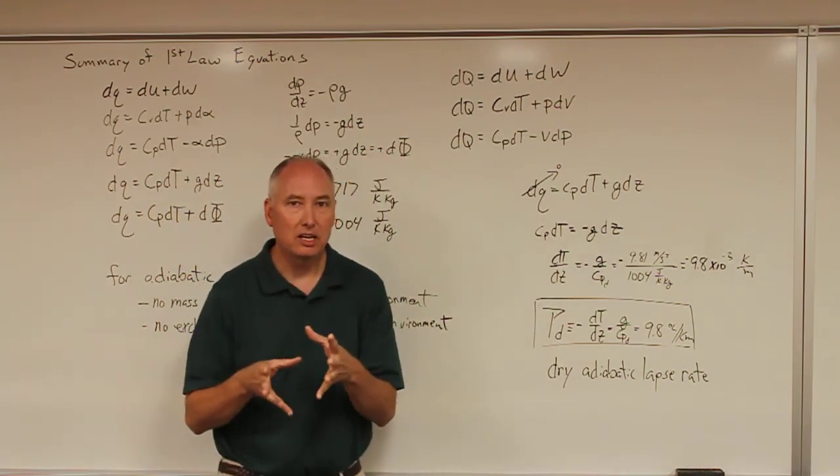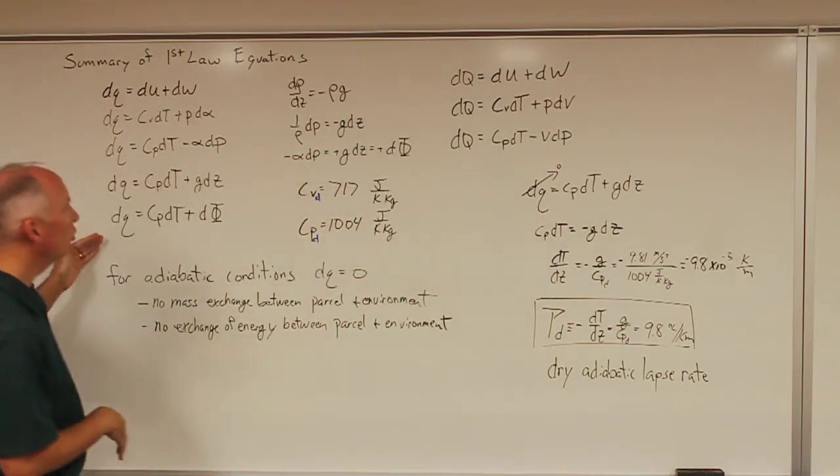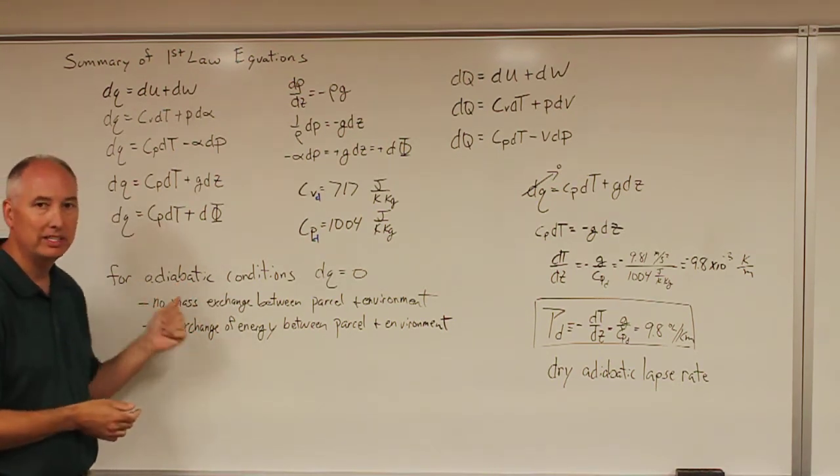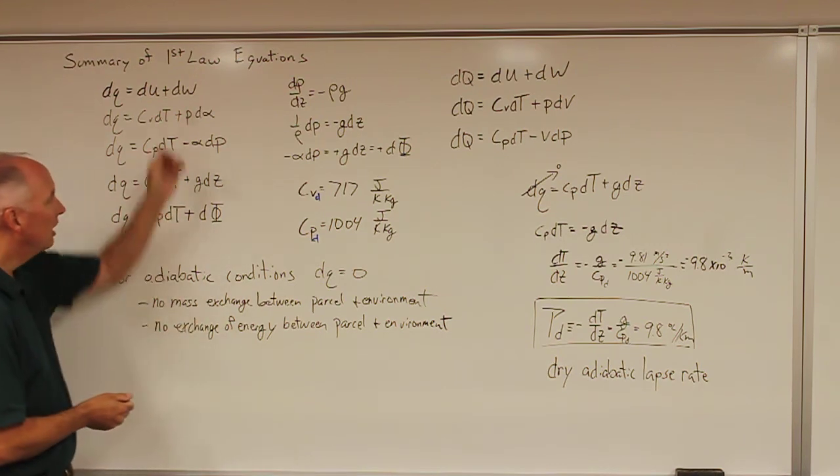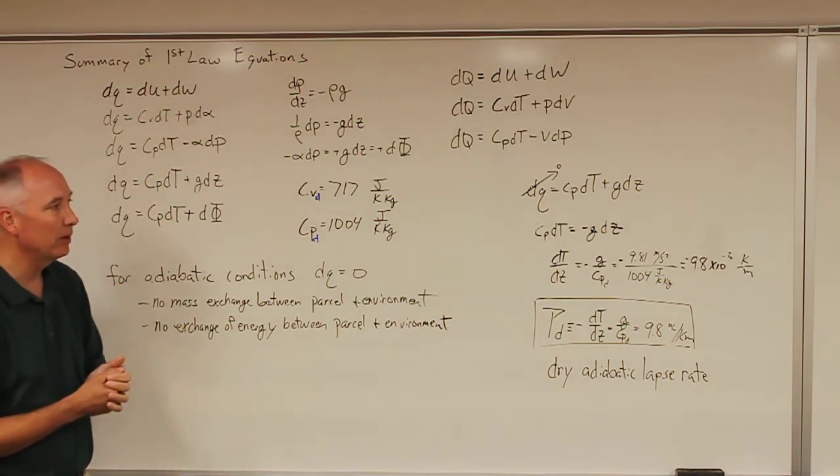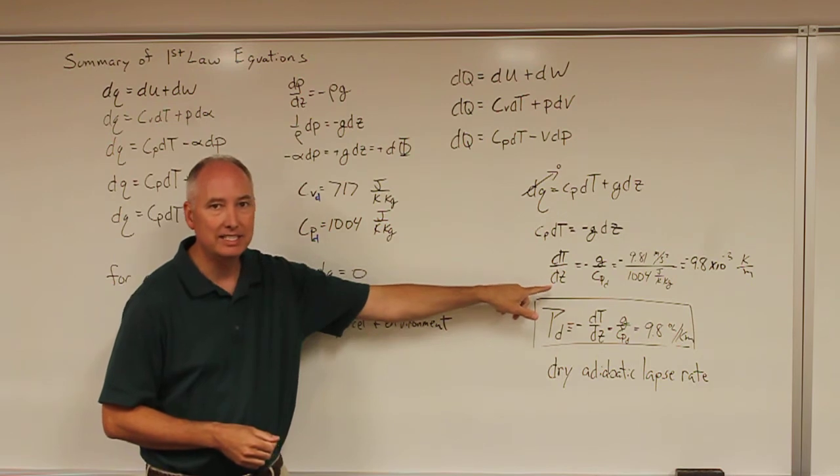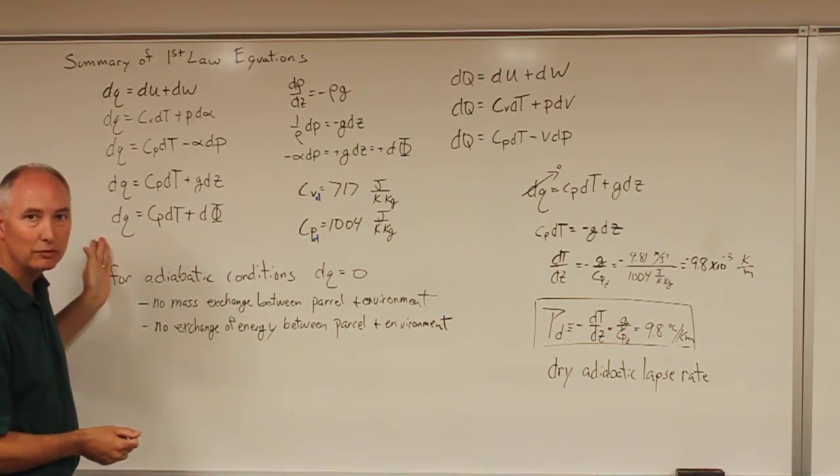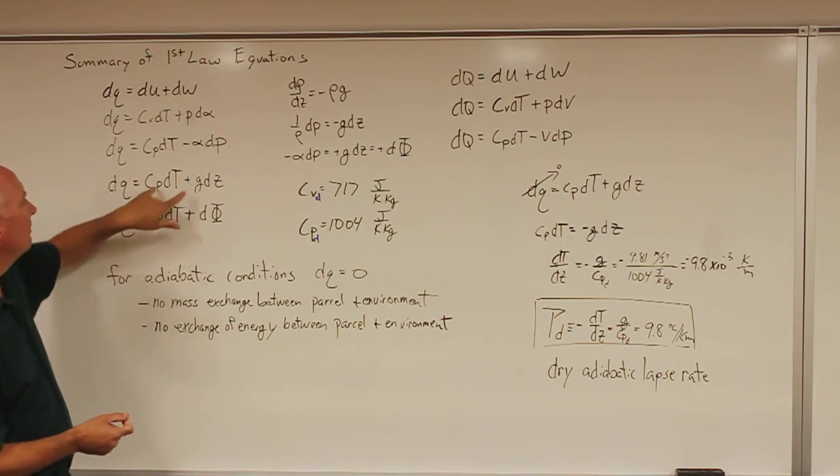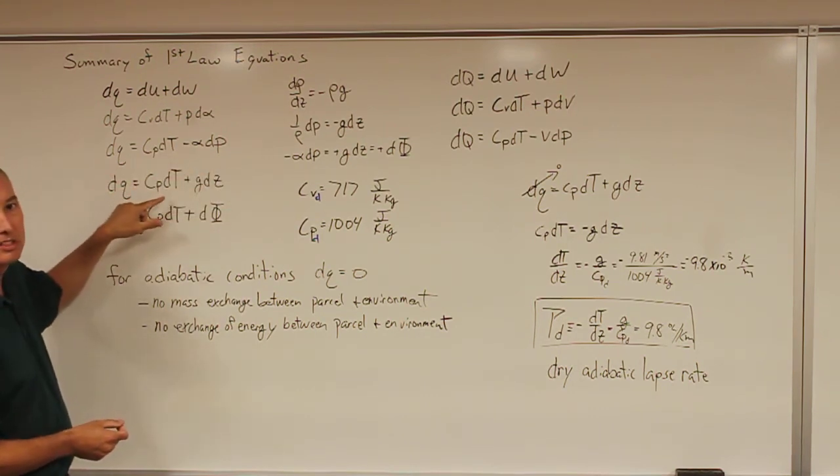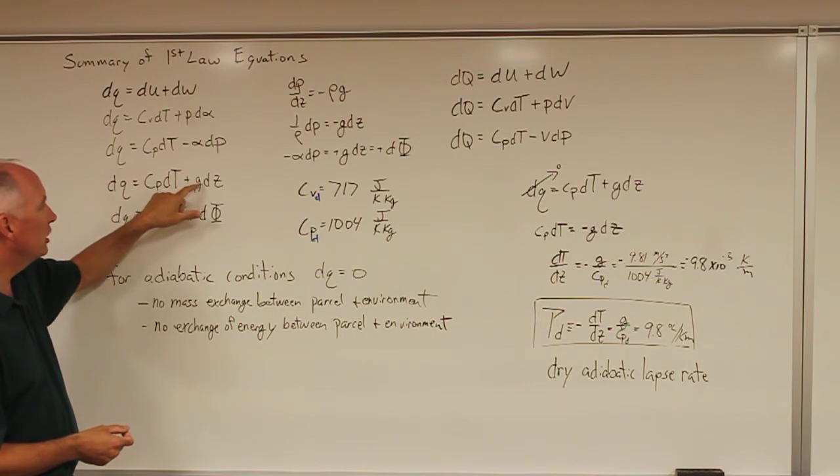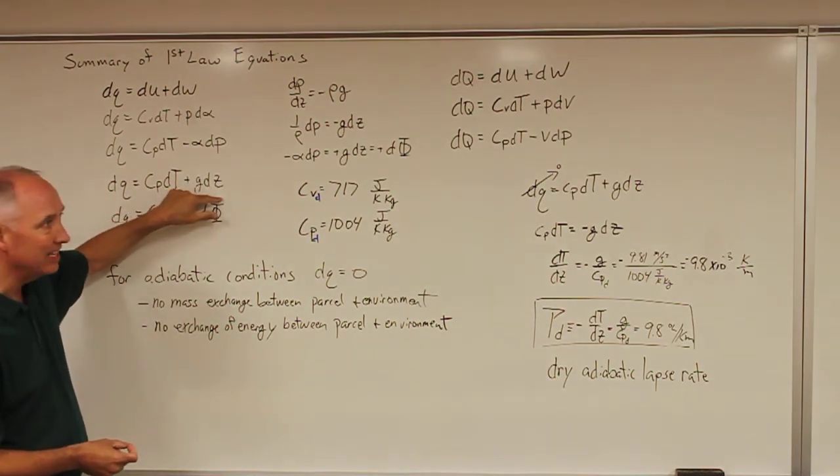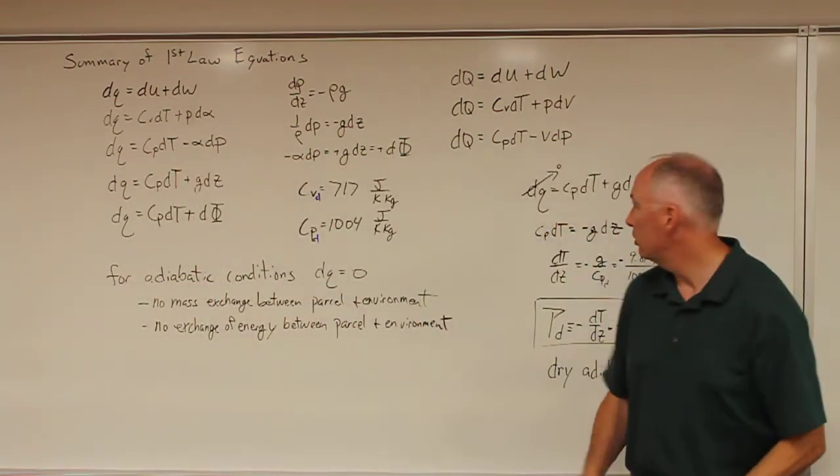And we're going to use that concept and one of these equations to determine what the dry adiabatic lapse rate is for the Earth's atmosphere. So if you want to do a lapse rate, you're trying to get a dt by dz. And which form of the equation might be most useful for getting an adiabatic lapse rate? It's going to be this form right here, dq is equal to c sub p dt plus gdz, because it already has a dt and a dz in it.